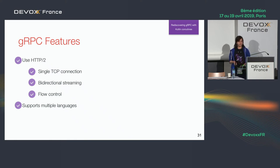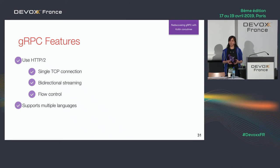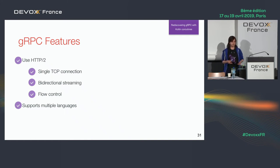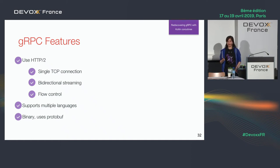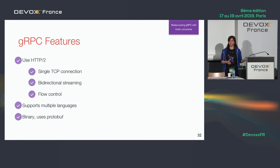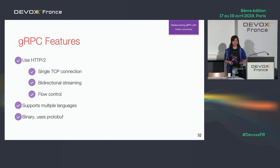One more thing about gRPC: it supports multiple languages. You define your API in the proto language, compile it to whatever language you want. If a language isn't officially supported by Google, you can write your own library. So you can have different microservices written in different languages all using gRPC. The main feature that helps us be more efficient is that gRPC is binary — HTTP2 is a binary protocol, HTTP1 was a text protocol. Protobuf, used by gRPC, is also binary, which helps serialize and deserialize data more efficiently.